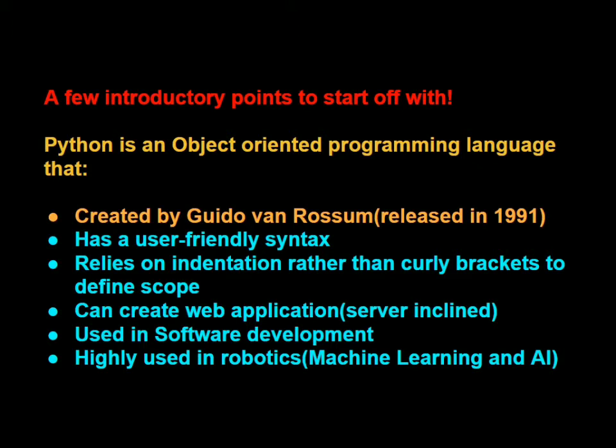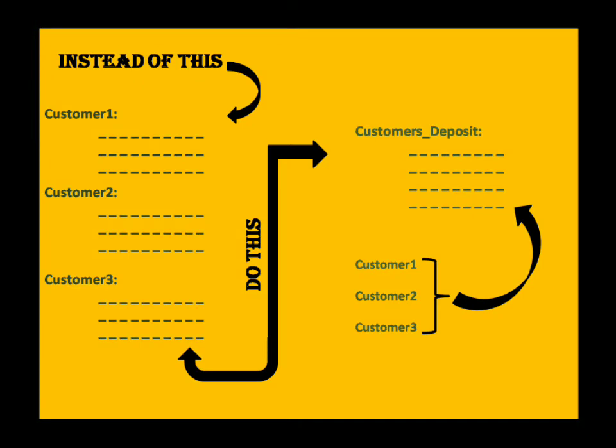You have a certain code written so that the person can come, enter their name and account number and input the amount they want to deposit. And accordingly you will display the details and say that yes, this much has been deposited into your account. Now, for example you have 30 customers lined up to do the same task.